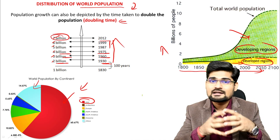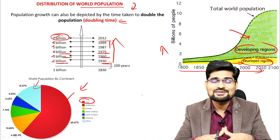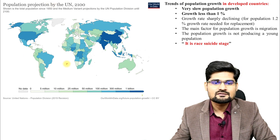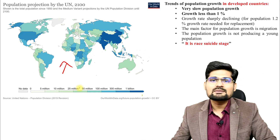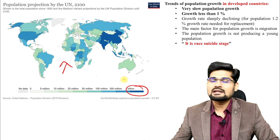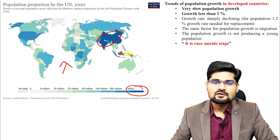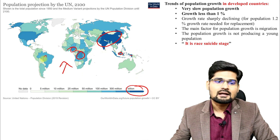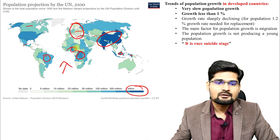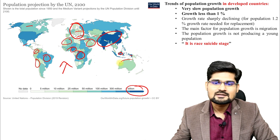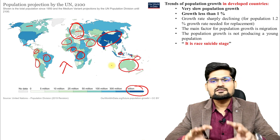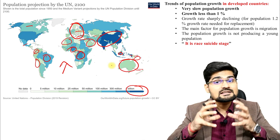The developing versus developed debate continues in population growth and distribution as well. The UN projection map for 2100 shows areas with more than 1 billion population in deeper shades — you observe those areas of the world. There are lighter shades for European countries, some African countries, South American countries, Australia, New Zealand, and Tasmania. Certain areas have very low population, certain areas have extremely high population.